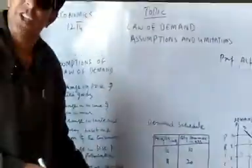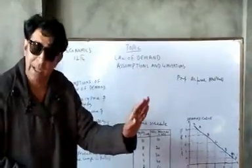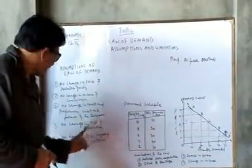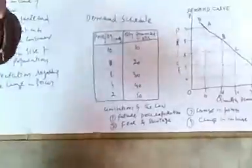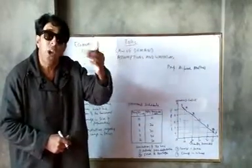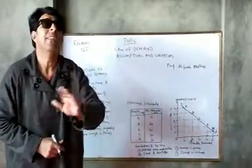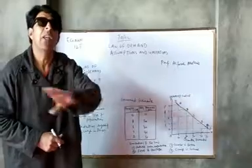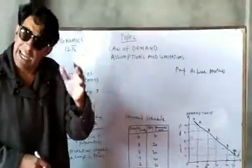Now we come to the limitations of the law of demand — exceptions where the law is not applicable. The first notable limitation is future price expectations. When a consumer knows in advance that the price of a commodity is going to increase in the near future, he demands more of it at present even if the price is already high. So if there is any expectation that price will rise in the future, the law of demand is not applicable.